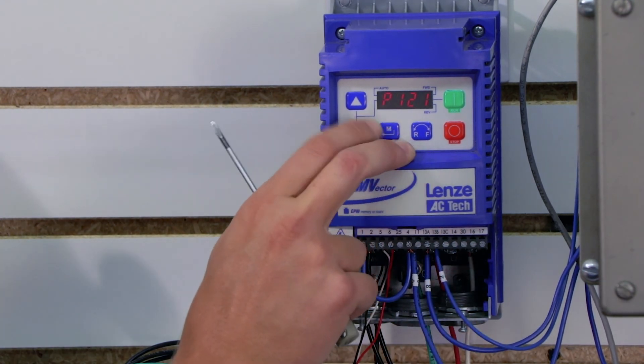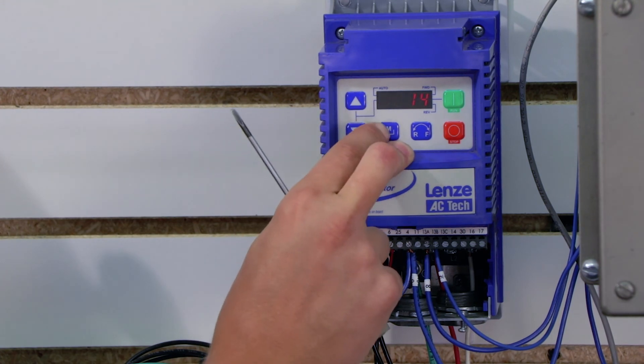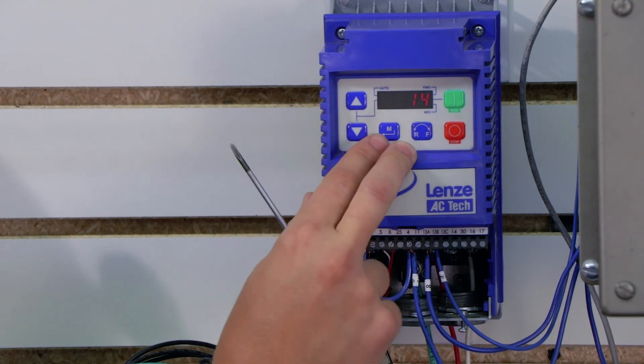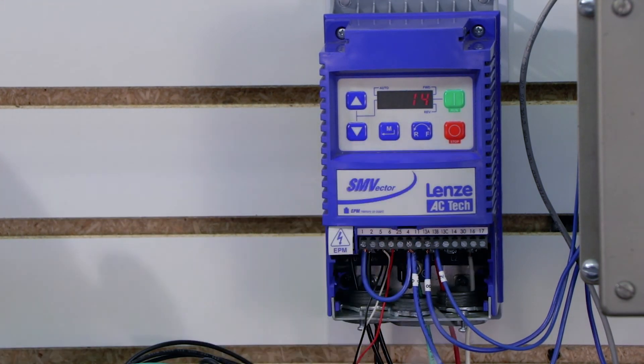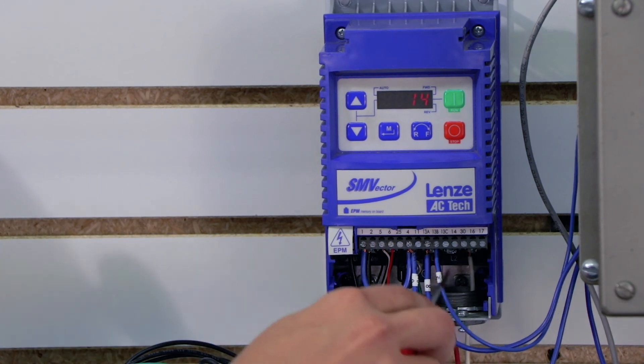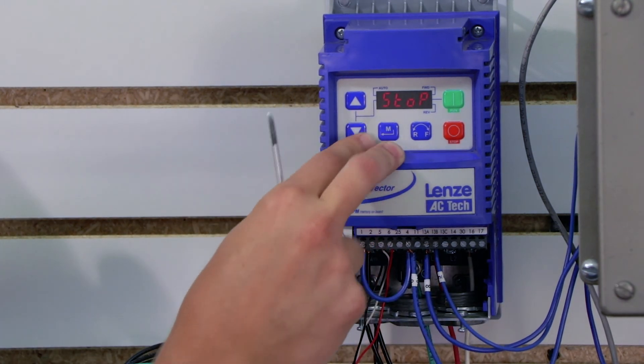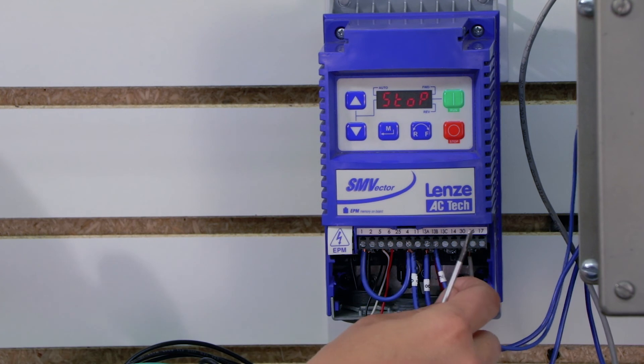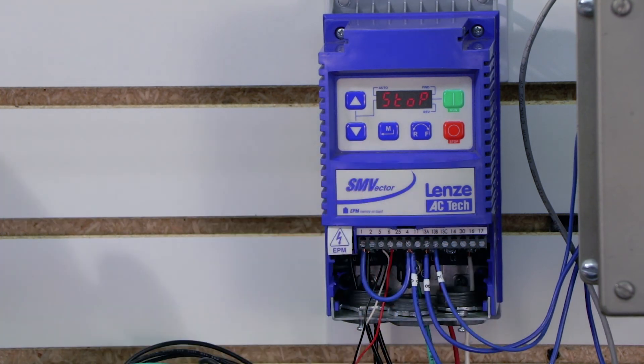So we're going to do the same thing for 13b. That's parameter 122. We're going to set that to 14 which is run reverse. So as long as electricity is flowing between 4 and 13b it'll be running in reverse and once we open up that switch it'll stop. So let's go ahead and run it.